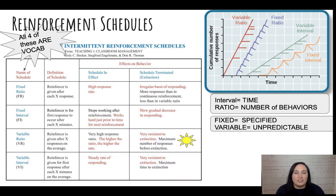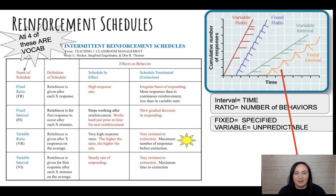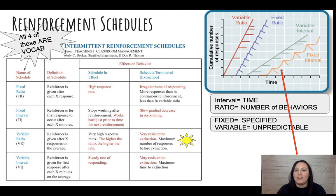Going back to fixed interval — notice that with fixed interval, if they have to answer a question five times before getting a sticker, there's a lull right after receiving the sticker. They think 'I have to do this five more times,' so their behavior actually dips and decreases briefly, then has an uptick right before they know they're close — at responses three, four, five — then the behavior peaks again.